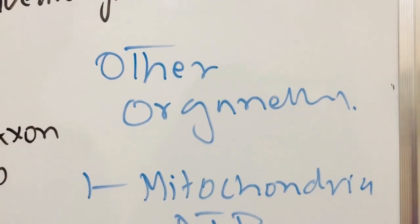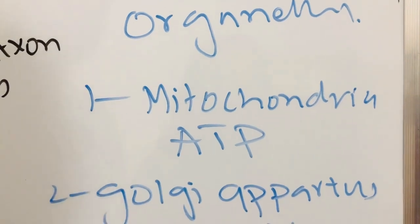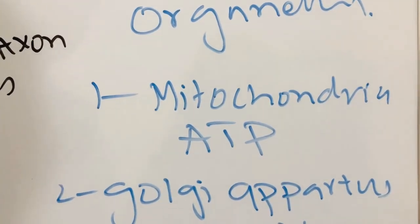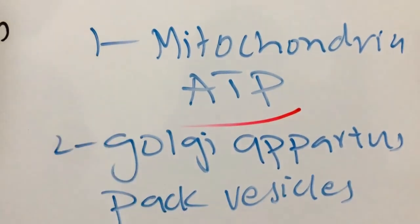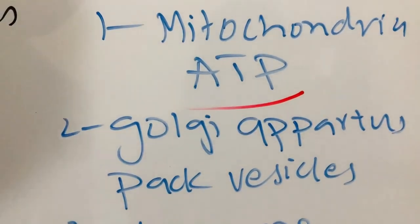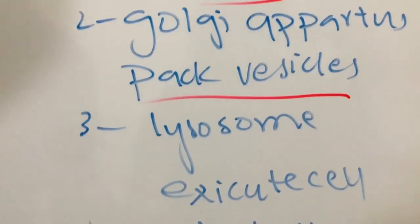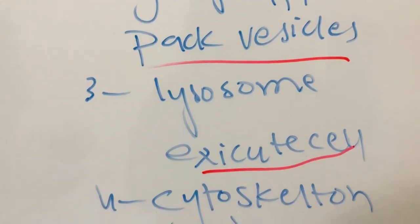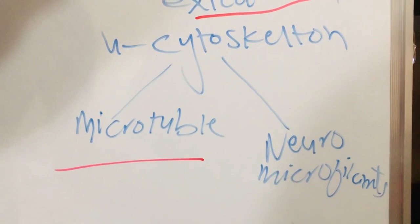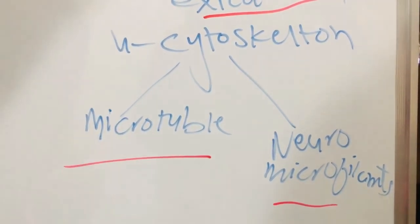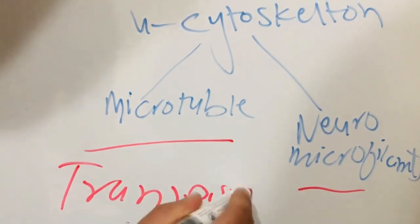Other organelles in the neurons are mitochondria, which is responsible for giving energy in the form of ATP, and our Golgi apparatus which is used for packaging of vesicles, and the lysosome which executes the cell. Also the cytoskeleton which has two types: the microtubule and the microfilaments. The microtubule is responsible for the transport of protein.